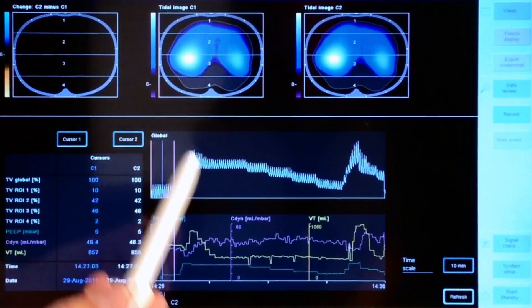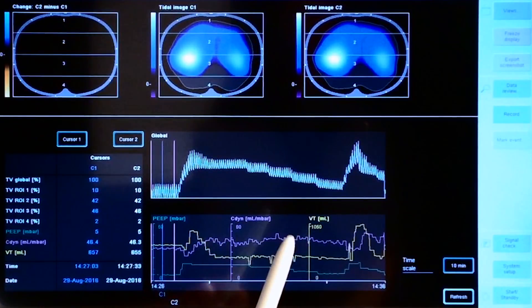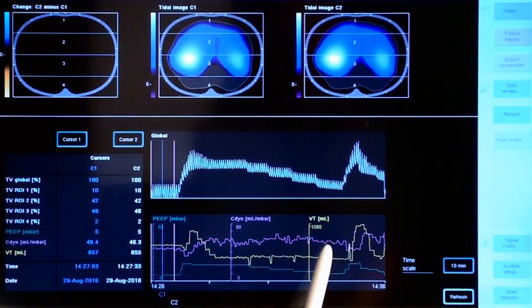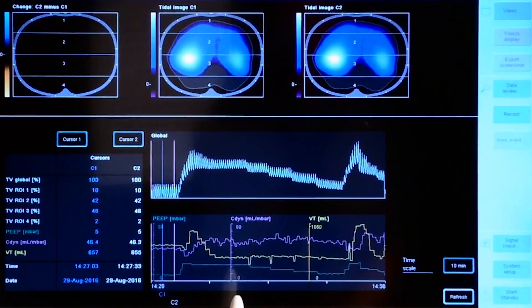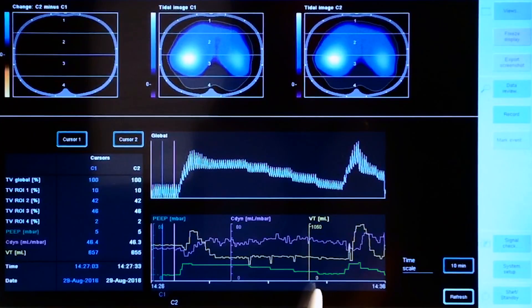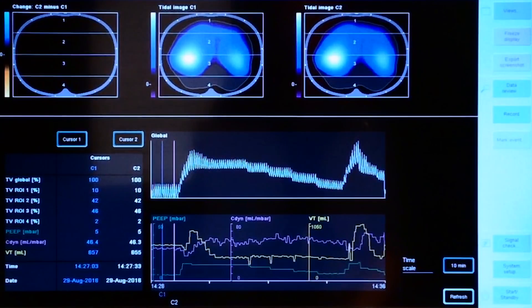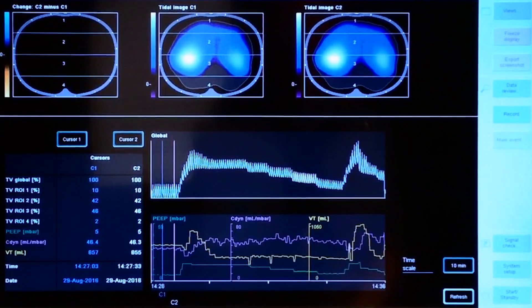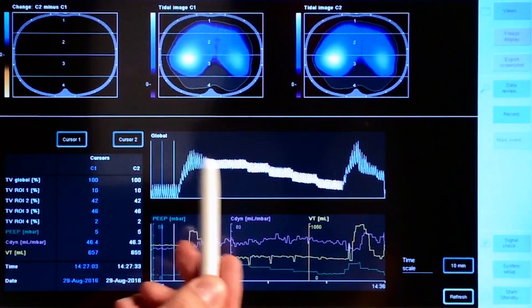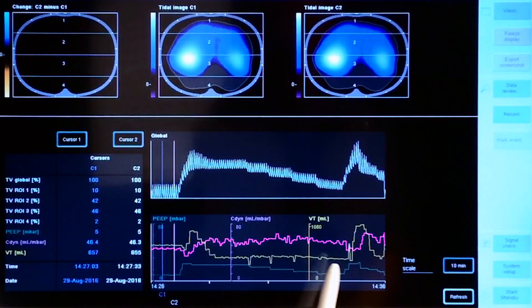According to the study protocol, PEEP was optimized based on global dynamic compliance from the ventilator. During the decremental PEEP trial, compliance shown in pink only drops at a PEEP level of 6. This is indicated by the green line representing the PEEP level. Therefore, a PEEP level of 8 was chosen as the best PEEP level. During the remaining steps, global compliance was more or less unchanged.